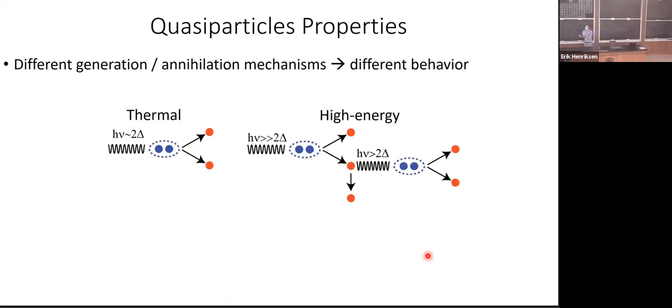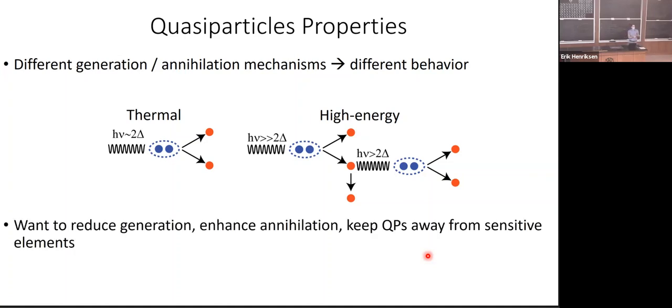I'm going to actually skip over this a little bit. Basically, different behavior will give you different generation or annihilation mechanisms, for instance, different sources of these quasiparticles, different ways they destroy themselves, will give you different behavior. For instance, if you have quasiparticles because your thing just happens to be a little hot, you'll generate quasiparticles very near the gap edge. And the other hand, if you have a gamma ray coming in, it's going to generate super high energy quasiparticles, which can then emit phonons and generate more quasiparticles. So you'll get bursts. That's why maybe it wouldn't help to use a high gap material, because nothing's going to have a higher gap than a gamma ray. Basically, what we want to do is reduce the generation of these things, enhance the annihilation, we want them to recombine into Cooper pairs, and keep them away from sensitive elements. But we need a test bed for testing these things. So we're going to use what we call trapping measurements.